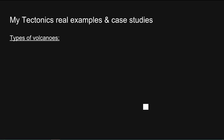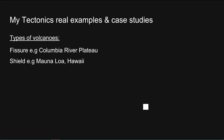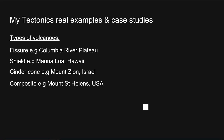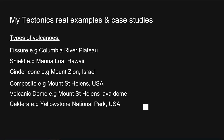Types of volcanoes: a Fissure Volcano example is the Columbian River Plateau. For a Shield Volcano, Mauna Loa, Hawaii. Cinder Cone — Mount Zion in Israel. Composite — Mount St. Helens in America. Volcanic Dome — Mount St. Helens Lava Dome. And Caldera — Yellowstone National Park.